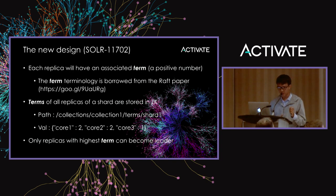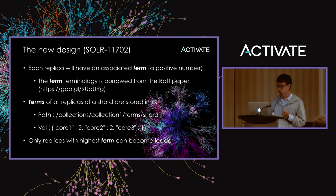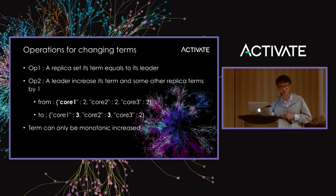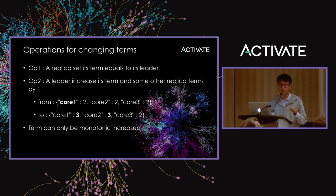One key feature of term values: only a replica with the highest term can become leader. So in an example where core1 and core2 each have term value 2 and core3 has a lower value, only core1 and core2 can become leader. What makes this design different from the previous one is that instead of arbitrary LIR state transitions, there are only two possible operations to change a replica's term. The first: a replica sets its term equal to the leader's term. A replica cannot set its term to an arbitrary number — only equal to the leader.